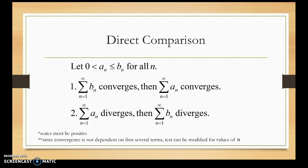Two things: the series must be positive. Also, this condition may not be satisfied for the first several terms of the series. Direct comparison can be modified for the values of n that make it true, because convergence is not dependent on the first several terms. So if you need to modify the values for n, we can do that.